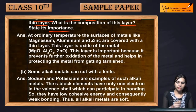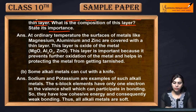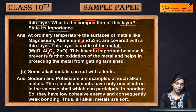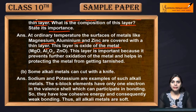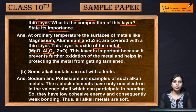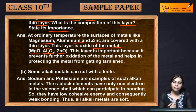At ordinary temperature, the surface of metals like magnesium, aluminium, and zinc are covered with a thin layer. This layer is the oxide of the metal. For magnesium the oxide layer is MgO, for aluminium it is Al₂O₃, for zinc it is ZnO, and so on.